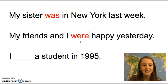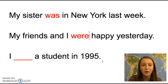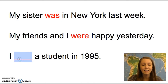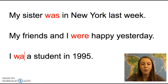Our last example is: I ___ a student in 1995. Again, we have a past time, in 1995, and no verb, so we'll use a past be verb. In this case, the subject is I, so we can use the be verb was.